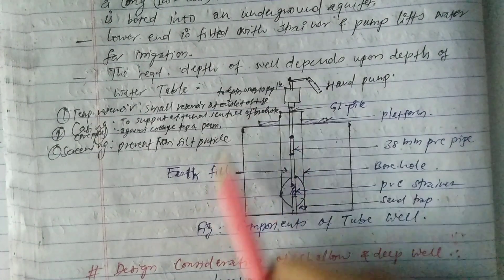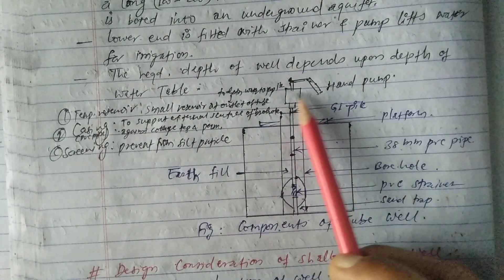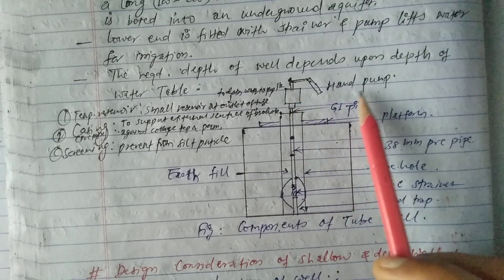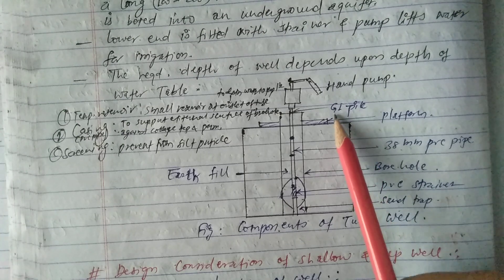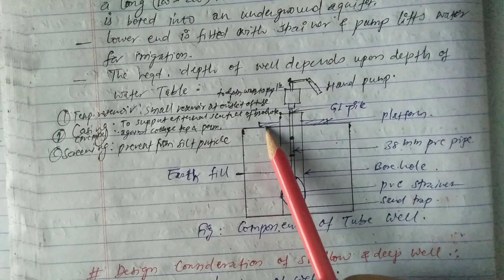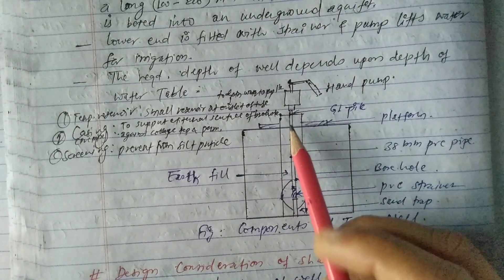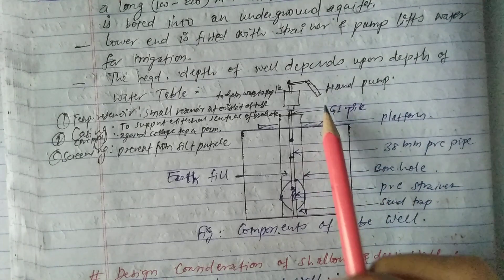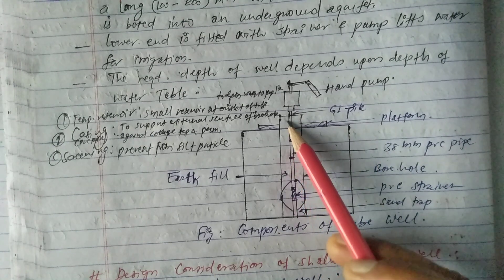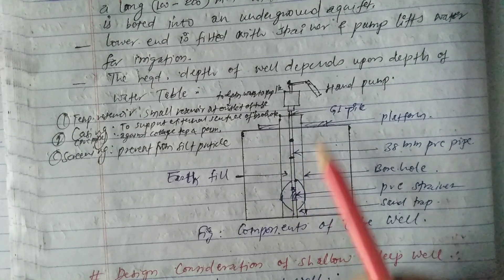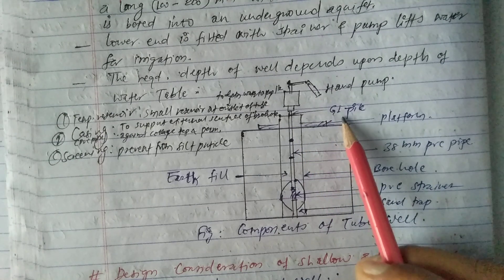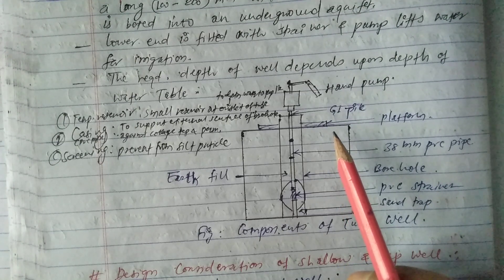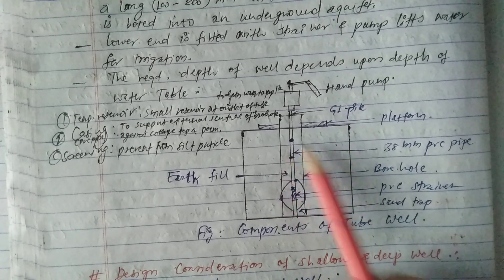You can understand from the figure as well. In the upper part, this is simply a hand pump, which is connected with the GI pipe — that is galvanized iron pipe. Here a platform is provided before the GI pipe, on which the hand pump is located. In the upper part we provide a GI pipe for better water quality and stability.